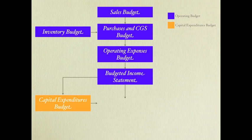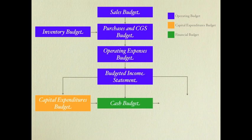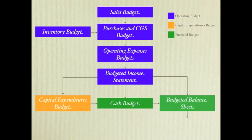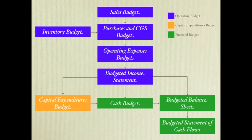The last set of budgets that make up the master budget is the financial budget. The first part of the financial budget is the cash budget — cash coming in and cash going out. Then with our budgeted income statement and the cash budget, we're able to create our budgeted balance sheet. And the last part would be the budgeted statement of cash flows. So we have a budgeted income statement, budgeted balance sheet, and budgeted statement of cash flows that make up our master budget.